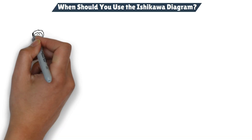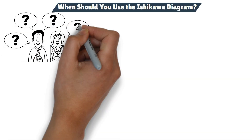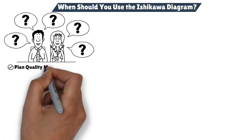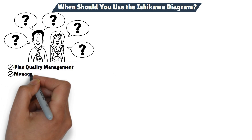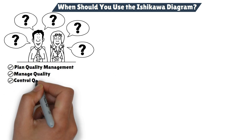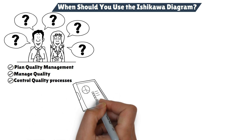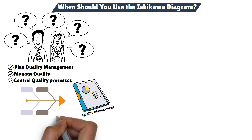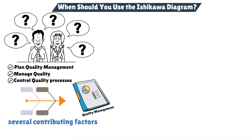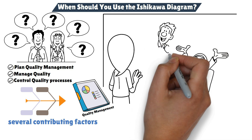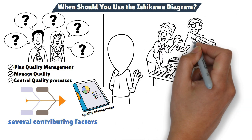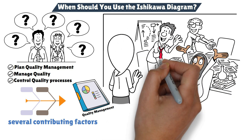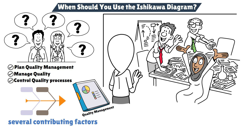You might wonder when this diagram comes into play. In project management, it's commonly used during the plan quality management, manage quality, and control quality processes. These are all part of the project quality management knowledge area, and the Ishikawa diagram is most useful when you're trying to solve complex problems that might have several contributing factors. It's particularly effective during brainstorming sessions, where team members come together to explore all possible causes of an issue.